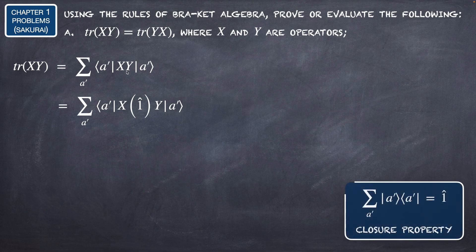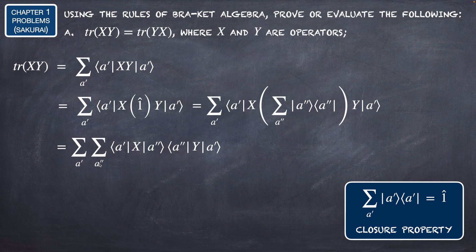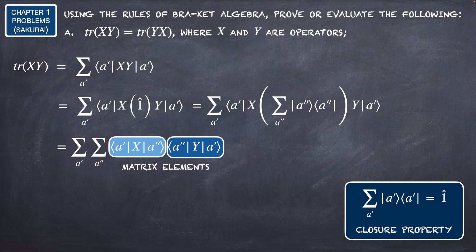We can introduce the identity operator in between X and Y. We do that because we know the closure property, which says that the summation over a' of the projection operator |a'⟩⟨a'| equals the identity. We insert that between X and Y, and rewrite this as two summations over a' and a'' of ⟨a'|X|a''⟩⟨a''|Y|a'⟩.